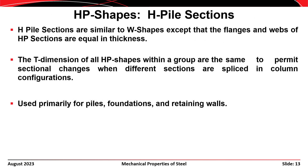H-piles or HP shapes are also used from time to time. They're similar to W-shapes except that with an H-pile section the flanges and the web have the same thickness, whereas with a W-shape the flanges are always thicker than the web. Like W-shapes, the T-dimension of all HP shapes is the same to permit section changes, and they're used primarily for substructures or foundation work—piles, retaining walls, foundations, and things of that nature.